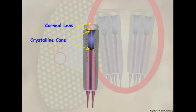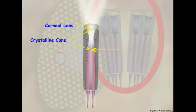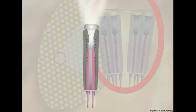Below the corneal lens is the crystalline cone. This structure is either secreted or formed by four cells called Semper's cells. Light enters the corneal lens and is focused on the light-detecting apparatus by the crystalline cone.